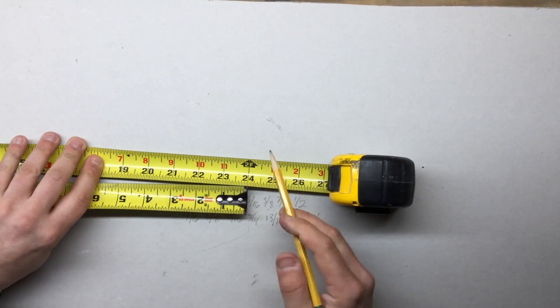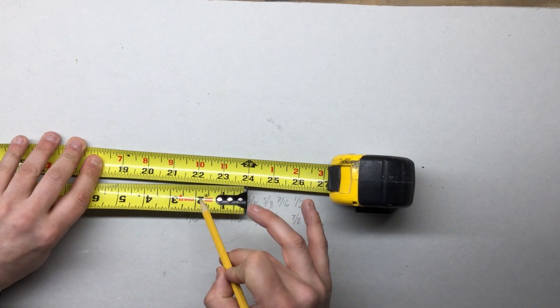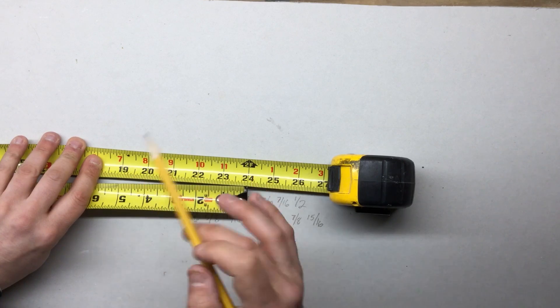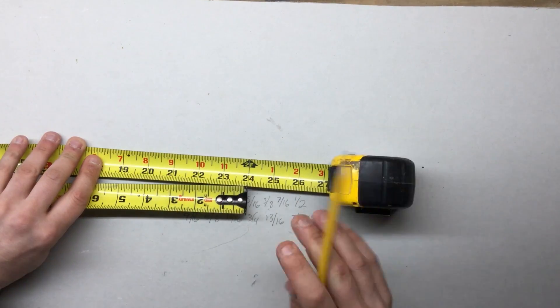Hold your tape like this, and you count one, two, three, four, it's twenty inches. Again, that's simple.